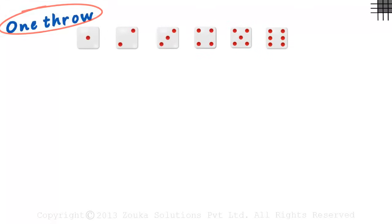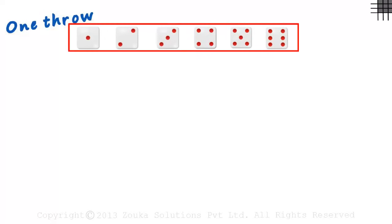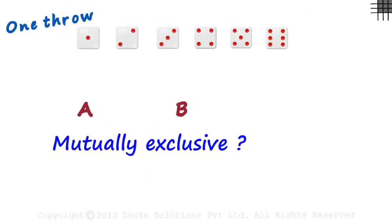At one throw, you have to get one of these. Let us consider two events A and B and understand if they are mutually exclusive or not.